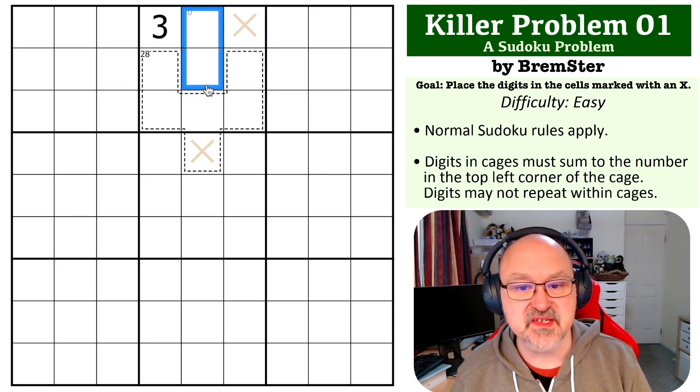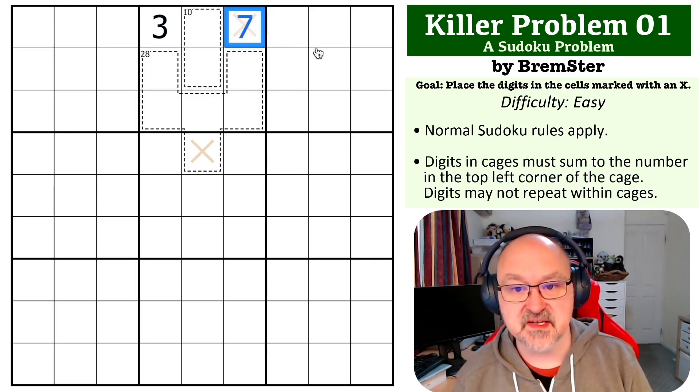Because if you put a seven somewhere, you'll not be able to hit the total because this is effectively an eight-cell 38 cage. So where does the seven go if you can't put it into the cage? This becomes a seven.